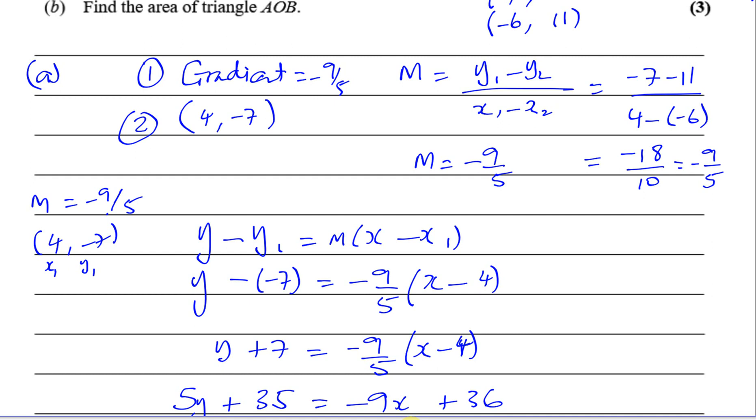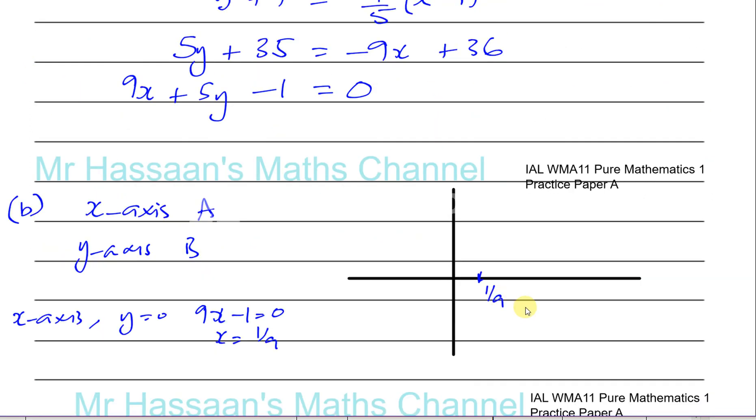It crosses the X-axis at A. On the X-axis, Y = 0, so 9X - 1 = 0, thus X = 1/9. That's where it crosses the X-axis when Y is equal to 0.